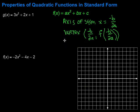We can also find the y-intercept, and that's pretty straightforward — it's just c from our standard form equation. So that constant term right there is the y-intercept. Now let's dig in and take a look at an example.